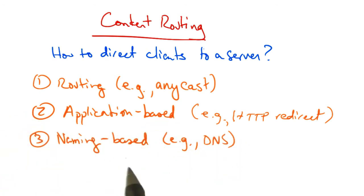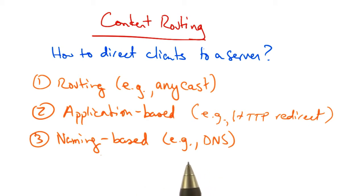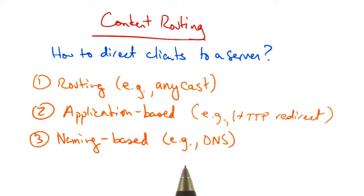The third and most common way that server selection is performed is as part of the naming system, using DNS. In this approach, a client looks up a particular domain name, such as google.com, and the response contains an IP address of a nearby cache.